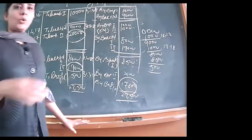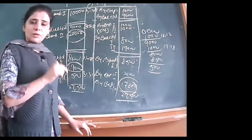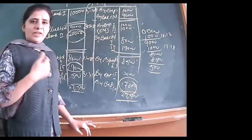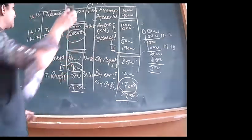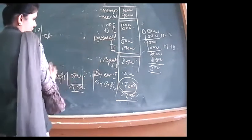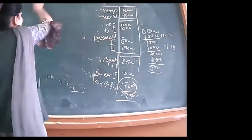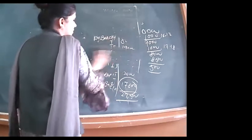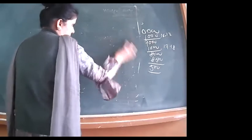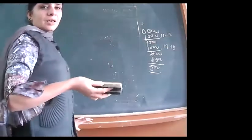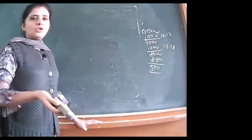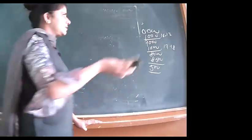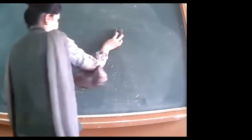We have now covered straight-line method, also called original cost method or fixed installment method. Now we are turning towards the Written Down Value (WDV) method, also called the diminishing balance method or reducing balance method. With numericals, we can clearly see the difference between SLM and WDV.